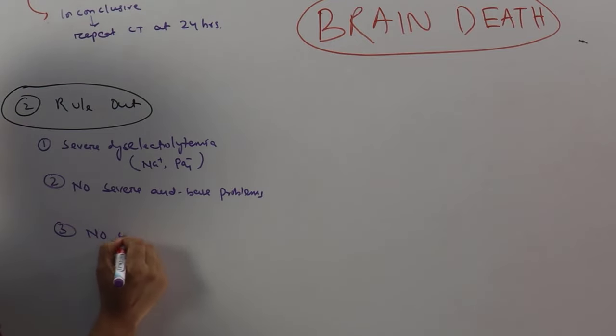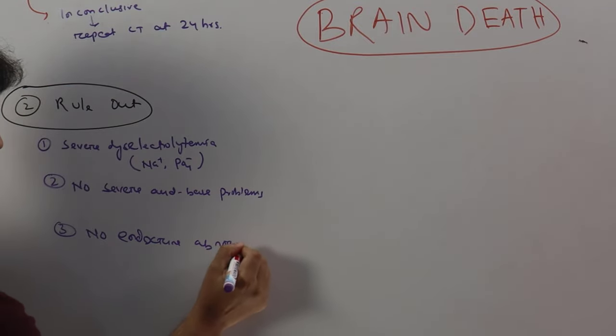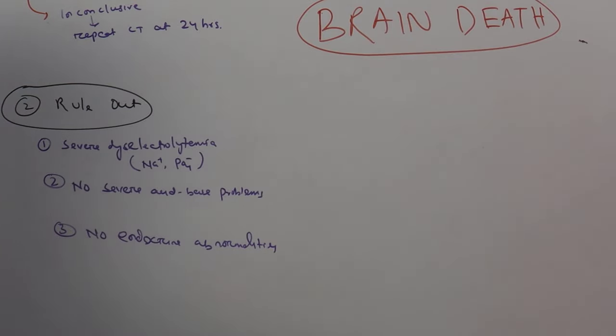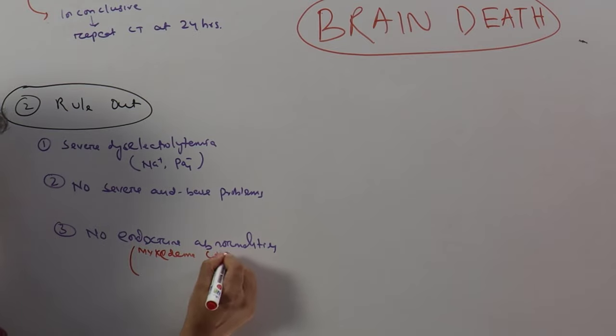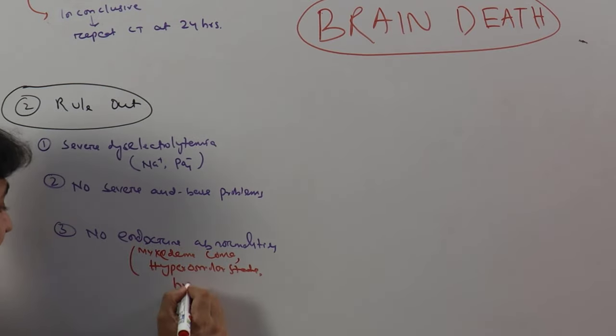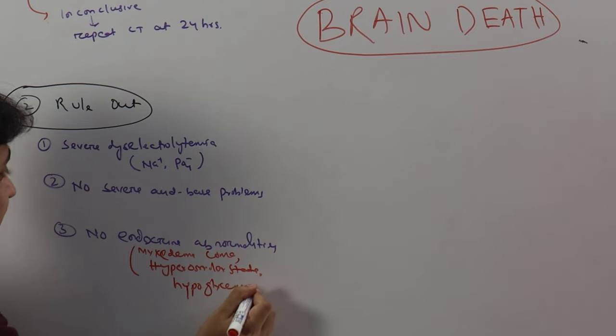No endocrine abnormalities. For example, what are the endocrine abnormalities that can mimic coma? That is myxedema, hyperosmolar state. The patient can have simple hypoglycemia. You have to be very careful.